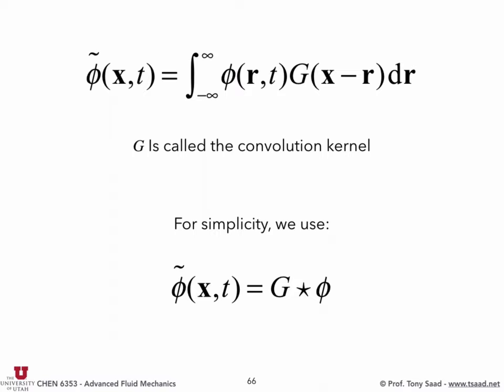The mathematical definition of the filter is called a convolution — an integral of a function times another function. The filter of the quantity phi in space and time is defined as the integral over the entire space domain from minus infinity to infinity of phi times this filter kernel G. The kernel can have different shapes — exponential, Heaviside, etc. The distance x minus r defines the filter width, which in practice is the grid resolution.